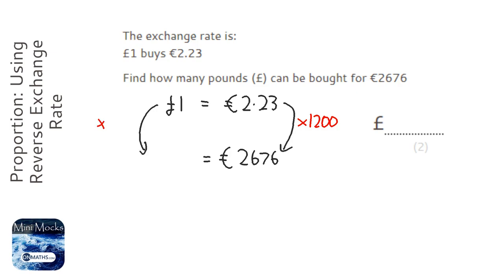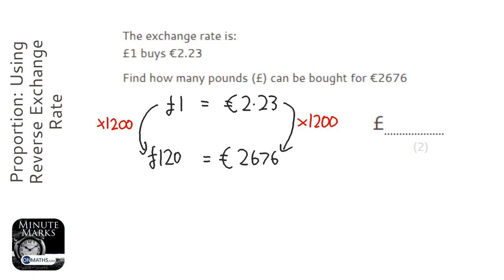So I'm going to times this side by 1,200, which is quite obvious. 1 times 1,200 is going to be 1,200, and that's going to be my answer: 1,200.